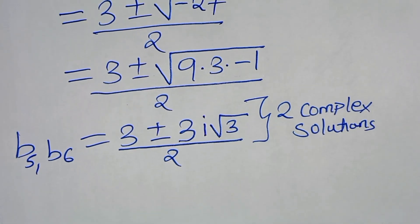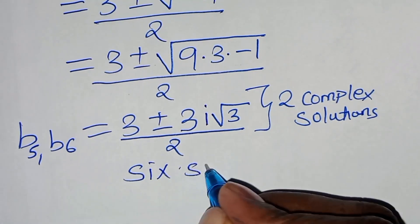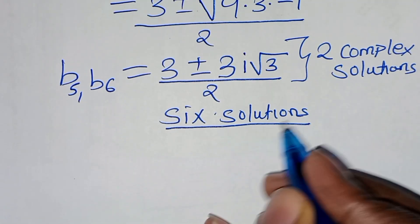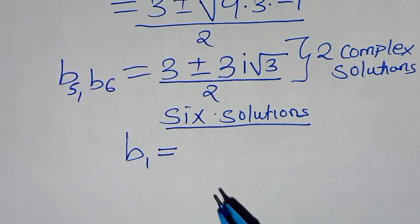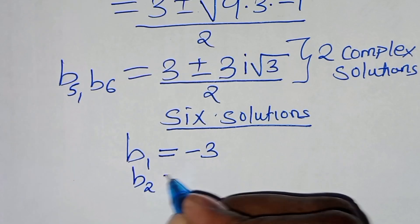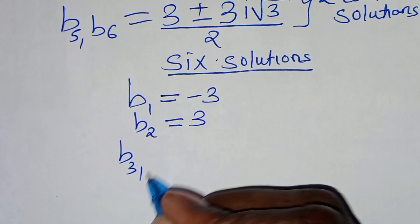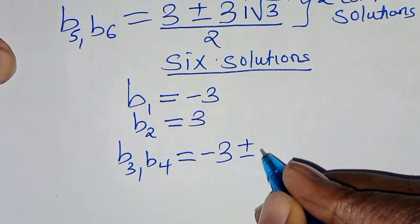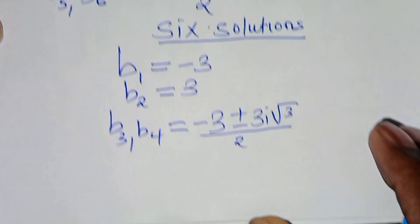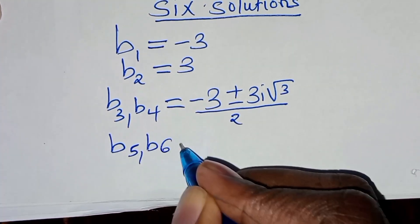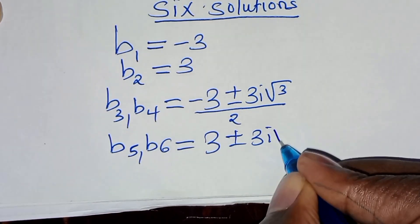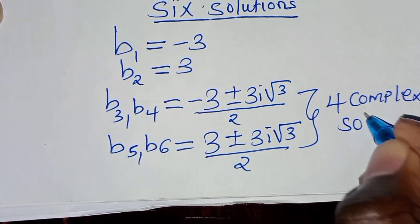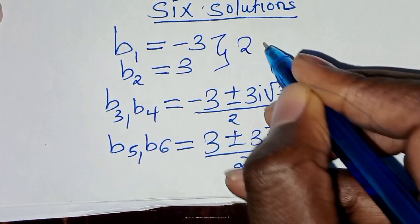In total, we have 6 solutions to this exponential problem: b1 equals negative 3, b2 equals 3 — these are the 2 real solutions. Then b3 and b4 equal negative 3 plus or minus 3i times the square root of 3, divided by 2. And b5 and b6 equal 3 plus or minus 3i times the square root of 3, divided by 2. These are 4 complex solutions.